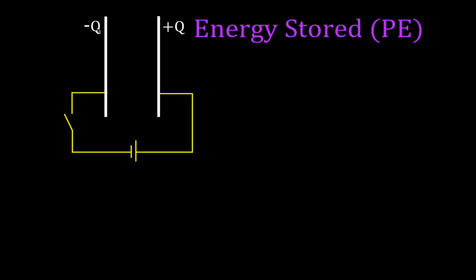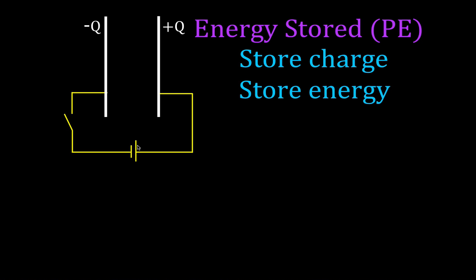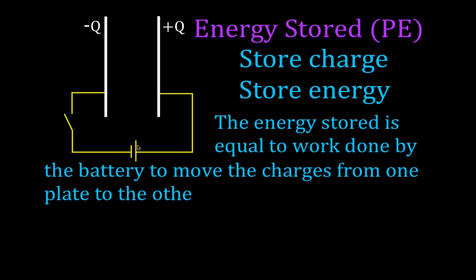This is a general diagram of a capacitor. When we talk about energy stored in a capacitor, you can say it two different ways: you can say that charge is stored — capacitors store charge — but in order to store charge, the battery has to do work to move the charges from one plate to another. So really, the energy stored is equal to the work done by the battery to move the charges from one plate to another.